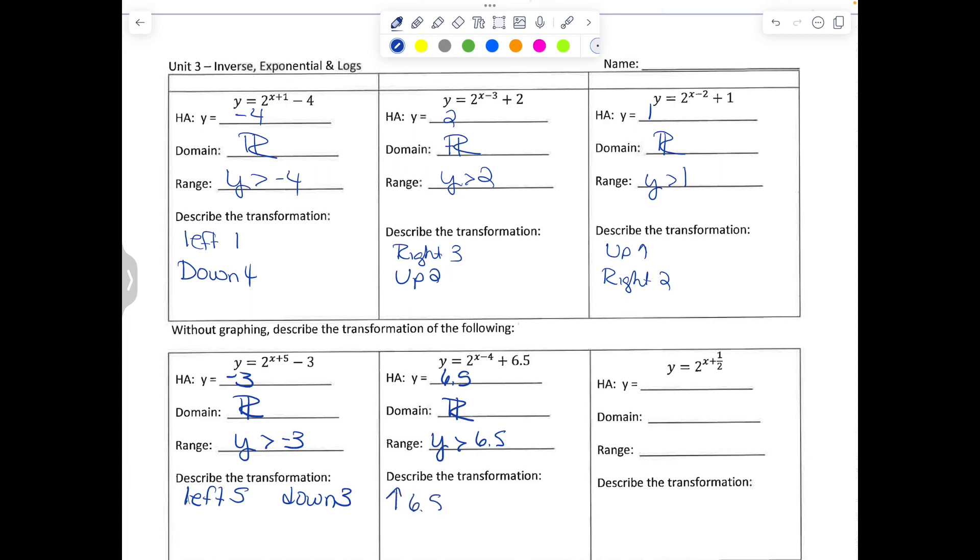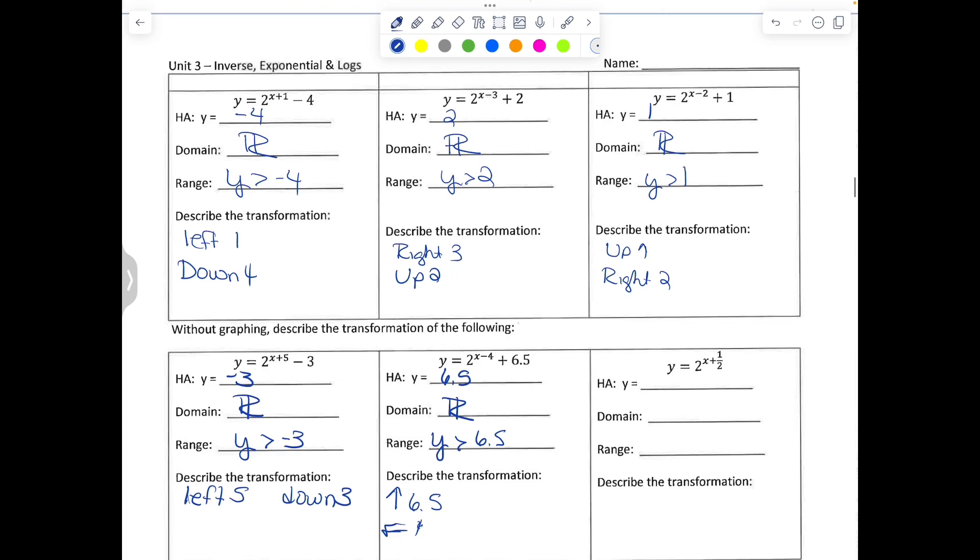So we went up 6.5 and then to the right. Okay, and then finally the horizontal asymptote is—okay, so there's some confusion in my class. That's all in parenthesis, and this would be plus 0. And this would just move left 1 half.